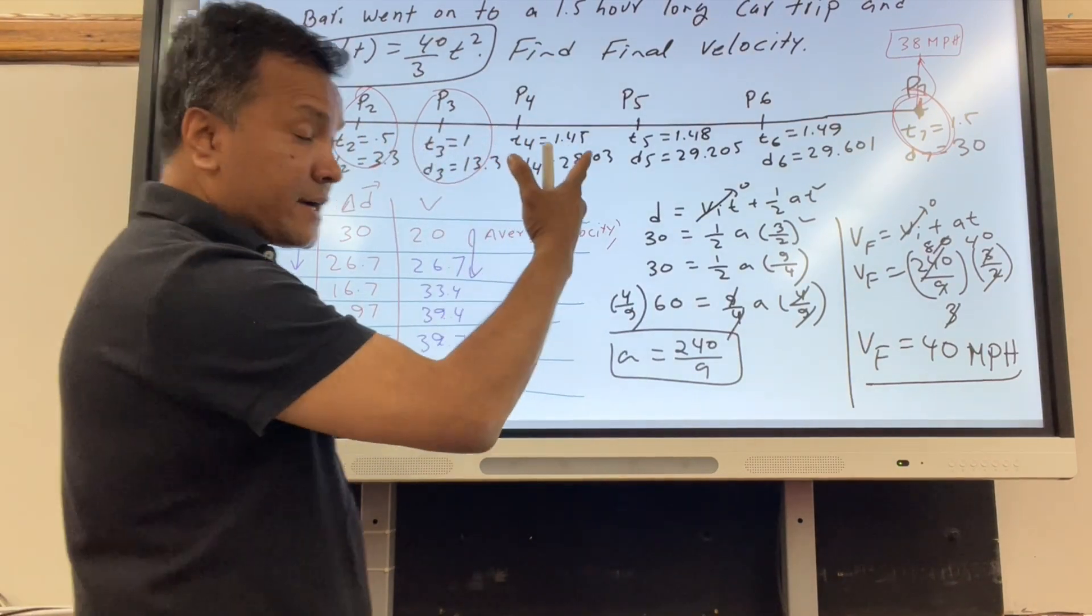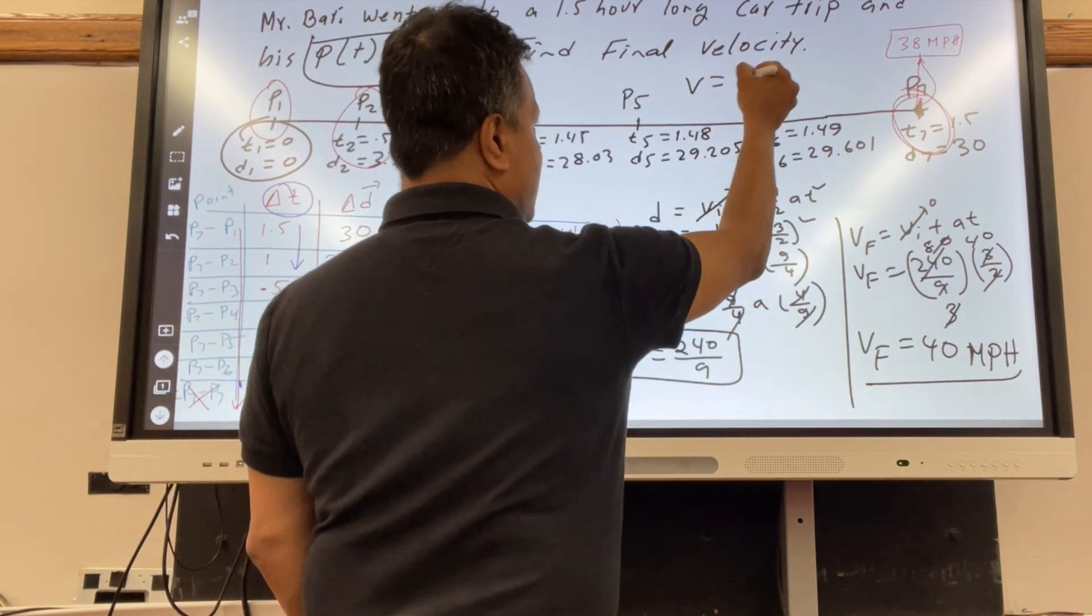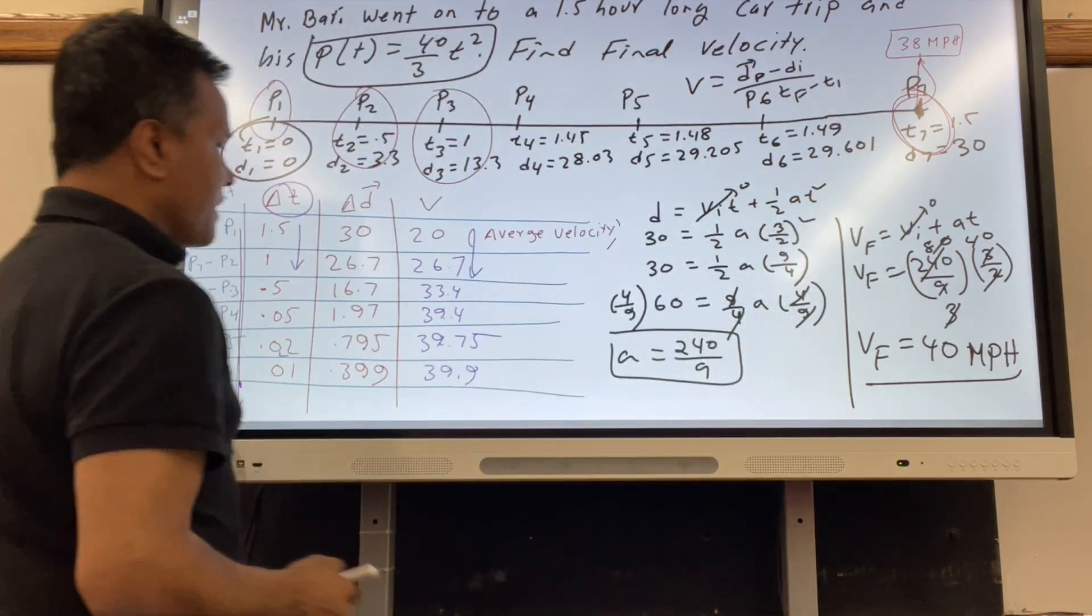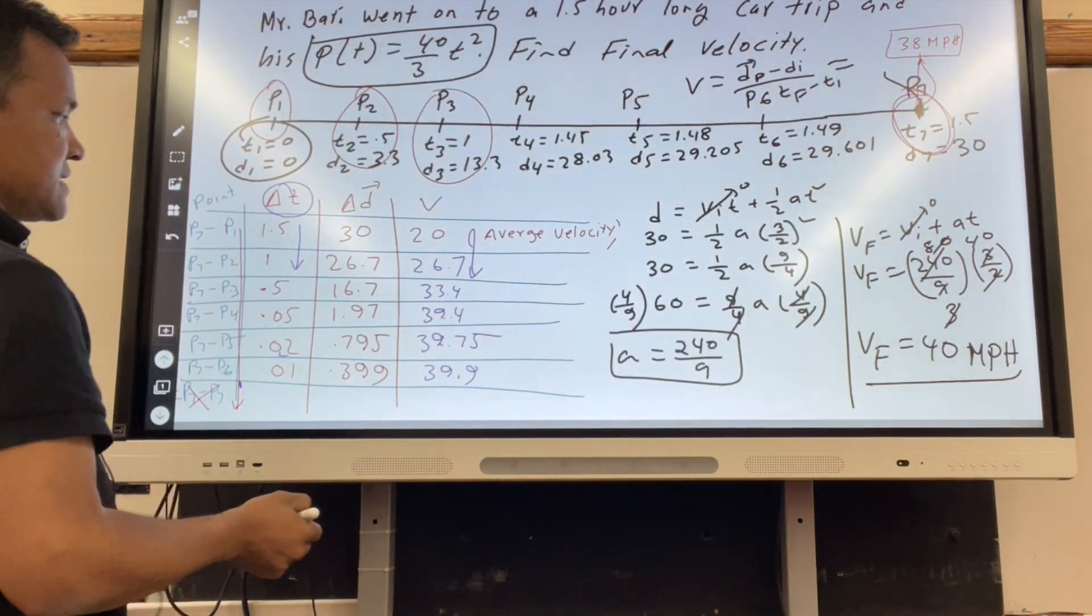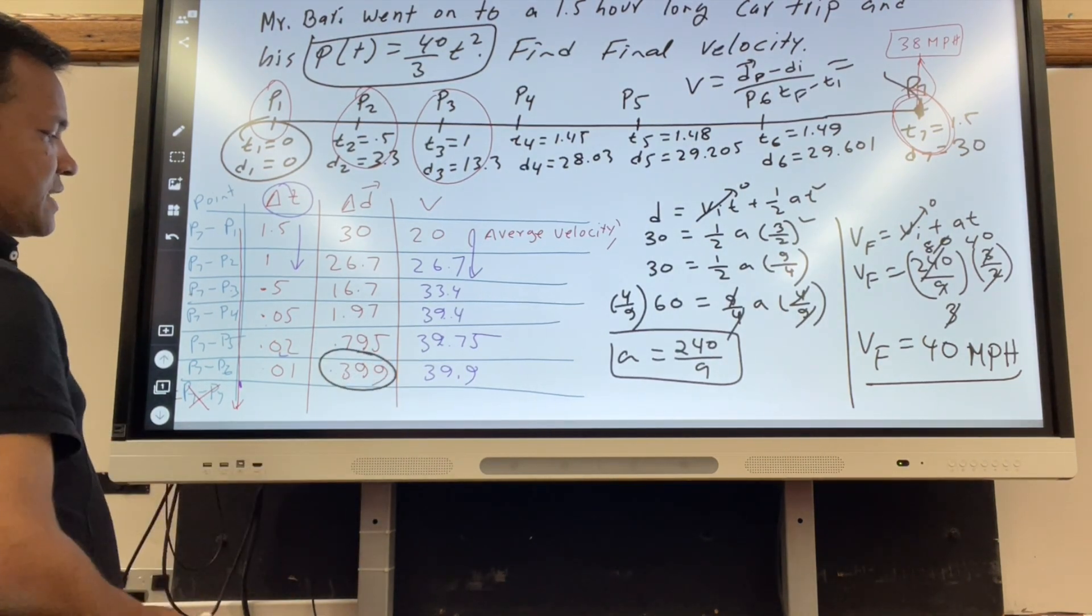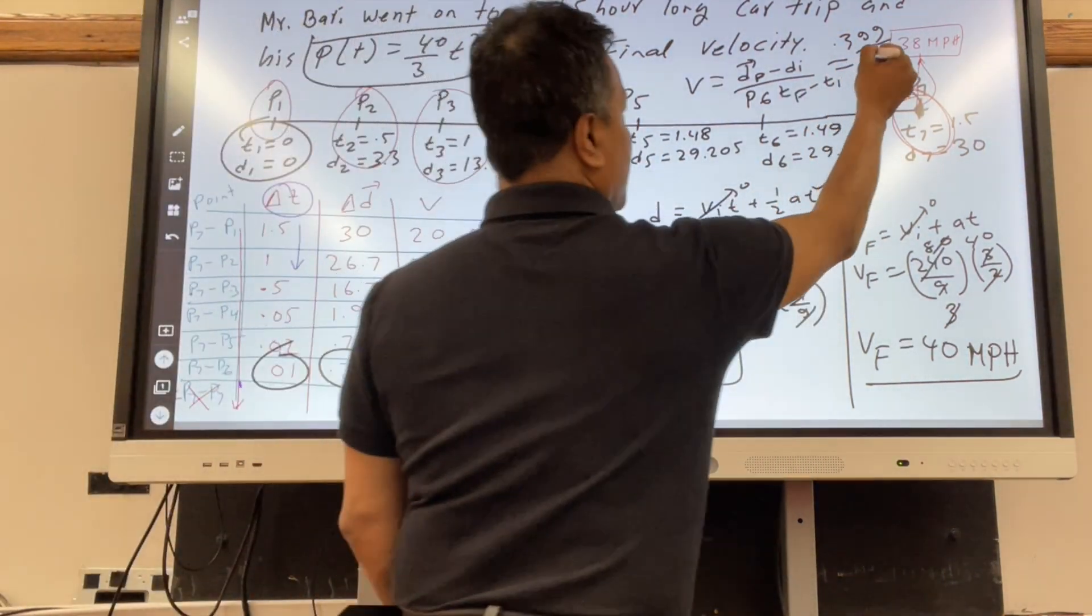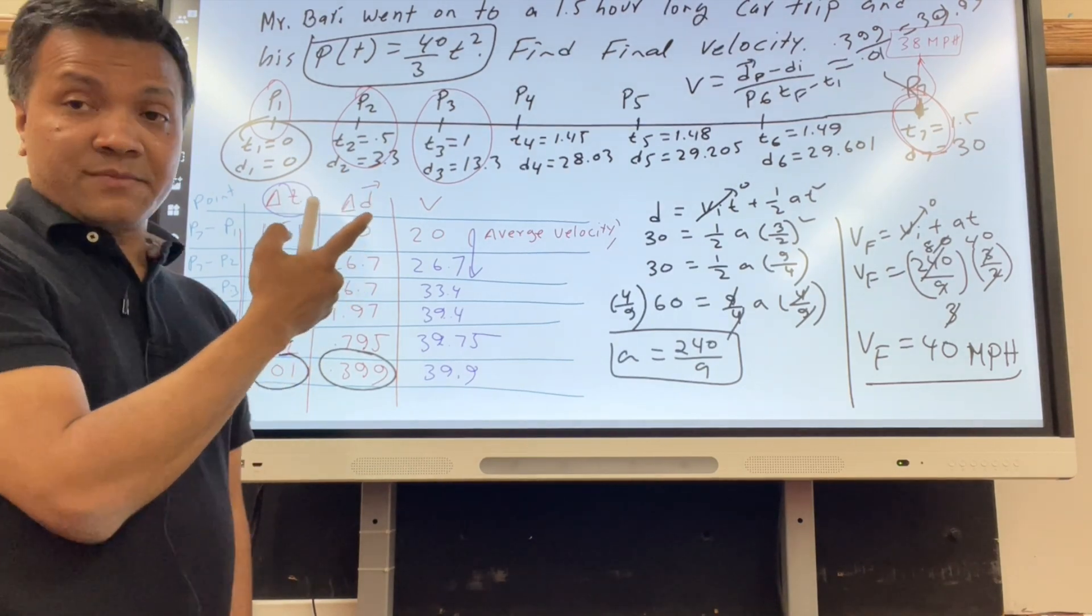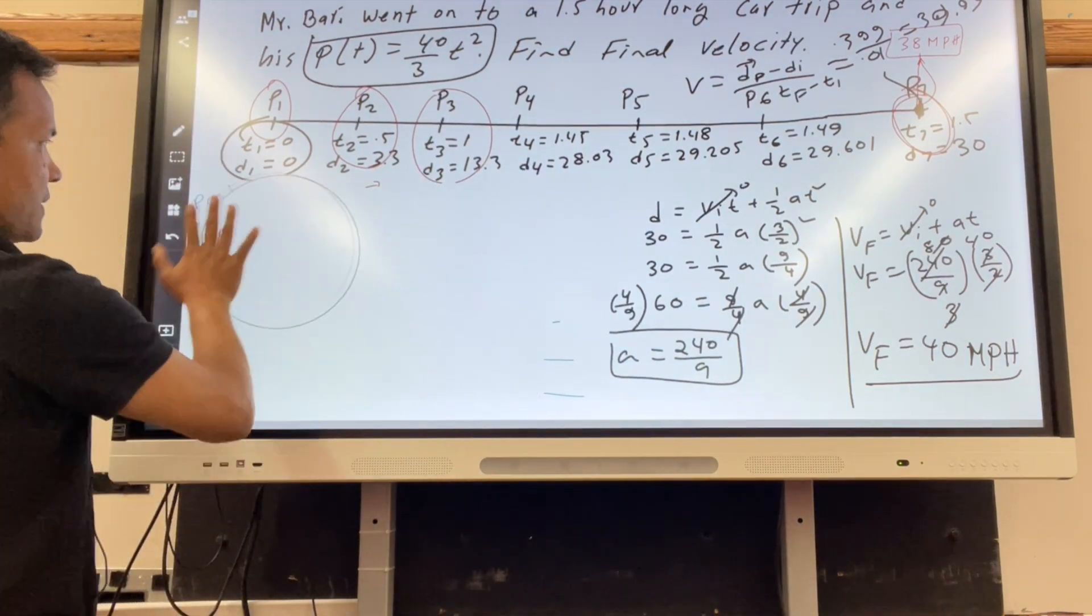This is the algebraic technique of finding velocity. What is the velocity formula? Velocity formula is d final minus d initial over t final minus t initial. We got that over here: 0.399 divided by 0.01, which gave us 39.99. We cannot put 30 minus 30 divided by 1.5 minus 1.5. However, we can use calculus.